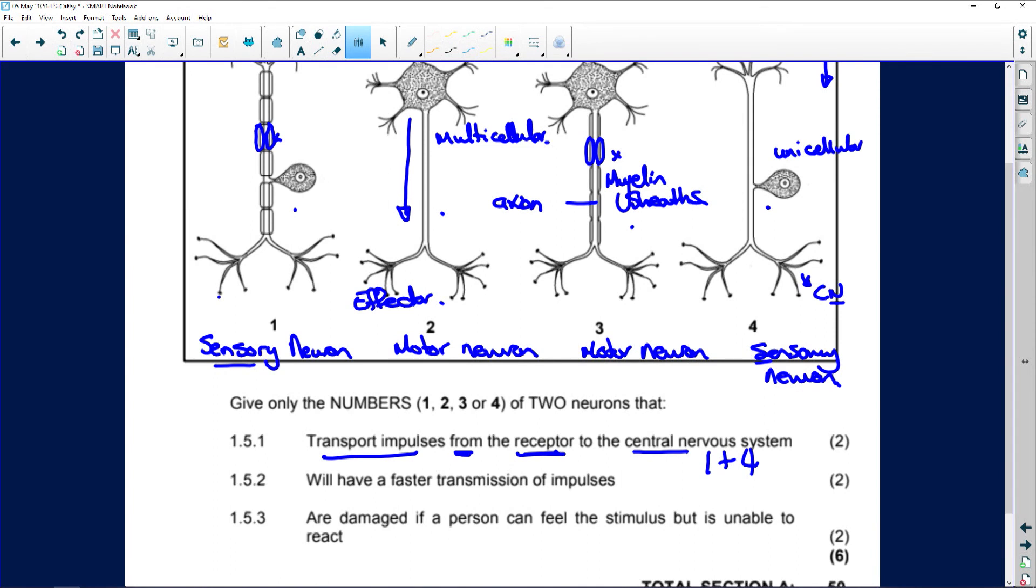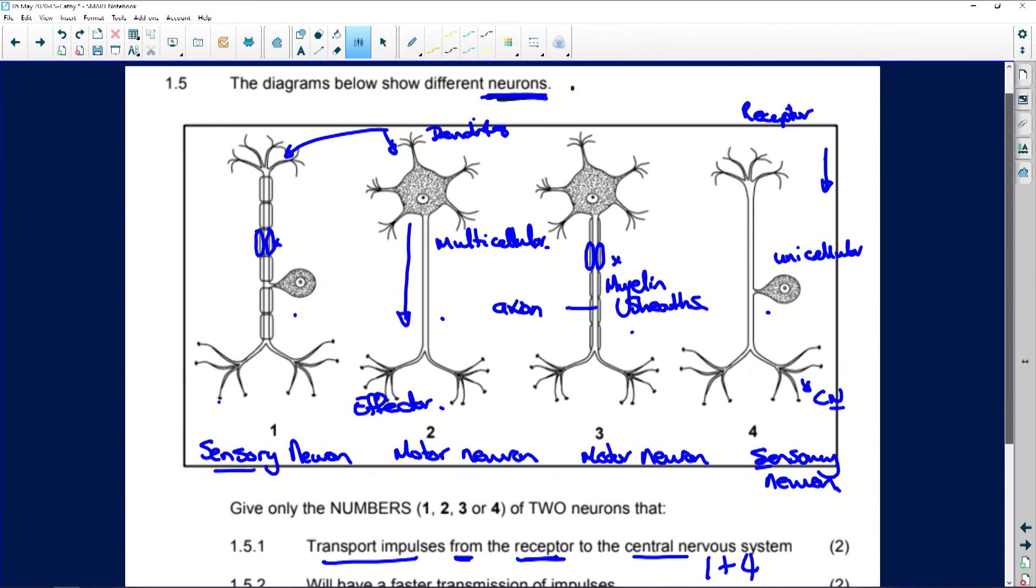We'll have faster transmission of impulses. What is the main function of the myelin sheath? To increase the rate at which impulses are transferred. So, it will be number one and number three. Why? They both contain myelin sheaths.